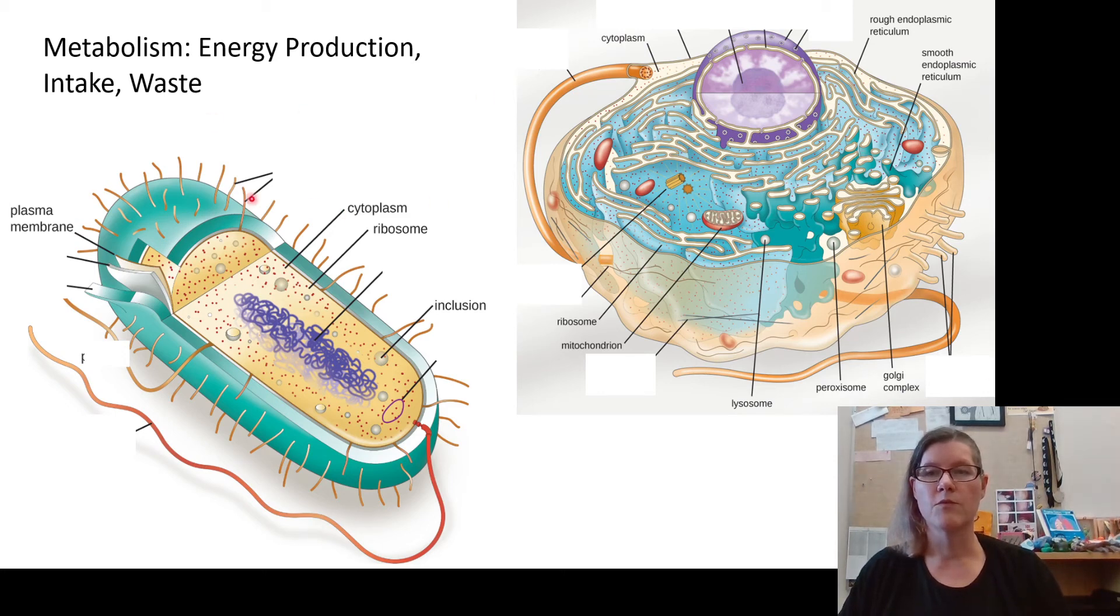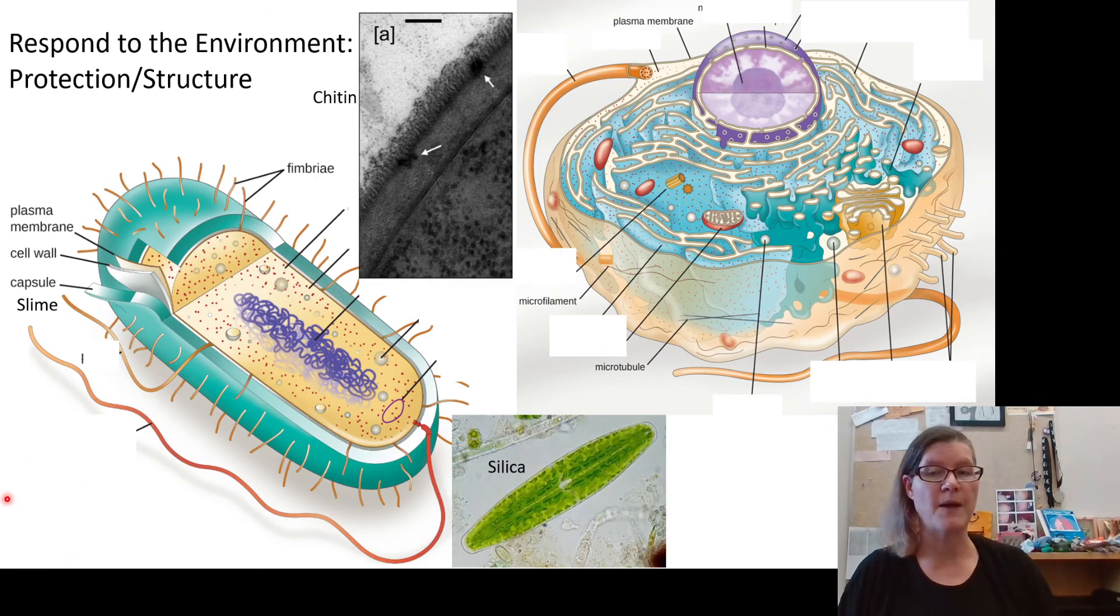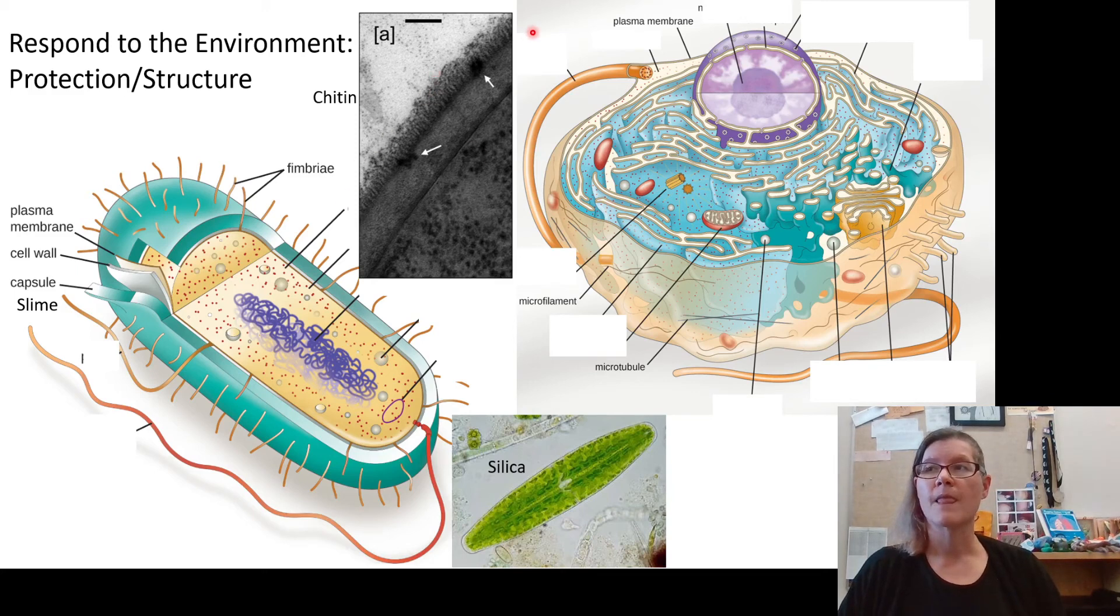Moving on again into part of our response to the environment. We break response to the environment into a couple of things, and we'll start with the idea of protection and structure, which is not letting the environment get to you. A key part relates to having good external protection, and eukaryotes do have some external protection. Everybody has a plasma membrane pretty much, and they're very similar amongst different organisms. Then there are cell walls on the outside of the cell. Some eukaryotes do have cell walls. Most things we classify as animals do not, and some smaller protists do not. But fungi have a chitin cell wall, a type of protein that surrounds them. Algae have different cell walls. Diatoms have silica around them. Many plants have cellulose.